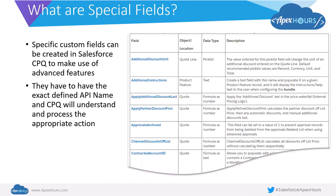Salesforce CPQ also offers some specific special fields which you can use. These are very specific custom fields to be created on specific objects within Salesforce CPQ. When you create them, Salesforce CPQ will recognize them based on the exactly defined API name and perform a specific action or enable a specific function. There is a comprehensive listing of all these special fields — you will see them referenced in a number of videos. I've taken a snapshot of part of that list, but it is definitely worthwhile to go through the detailed documentation to understand all the advanced features which can be enabled in Salesforce CPQ.